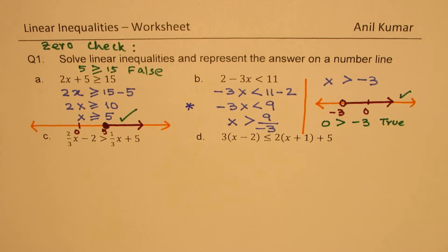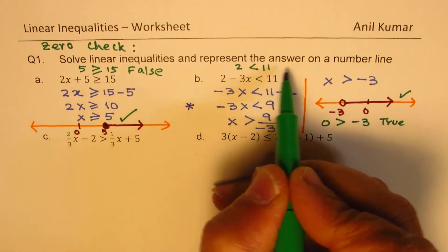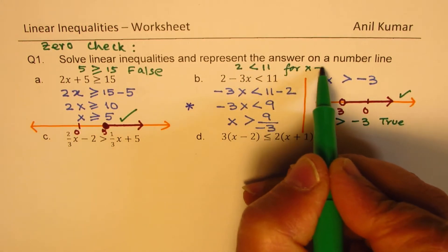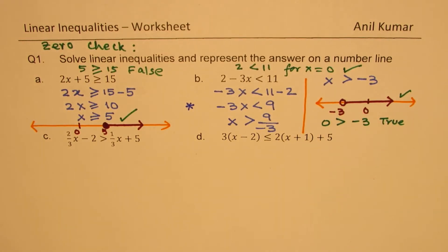You can perform a quick 0-check to verify you got the right answer. For the inequality 2 minus 3x less than 11, putting x=0 gives 2 is less than 11, which is correct, so 0 is part of the solution. I hope you got this concept. Let's move on and continue.